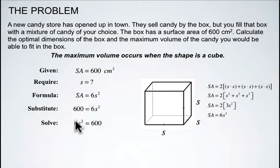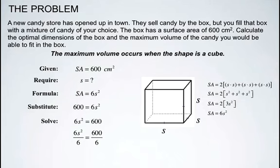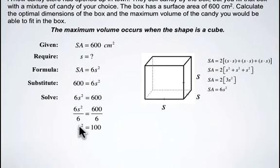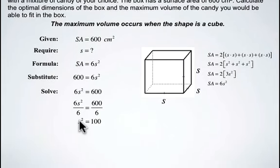So to do that I need to get rid of this 6 in front. Now that's acting like multiplying, so to do the opposite operation of division we will get rid of that 6 in front, but we need to do it to both sides of the equation. On the left hand side we have just s squared, and on the right hand side when we do 600 divided by 6 we get 100.